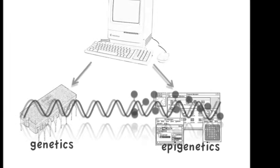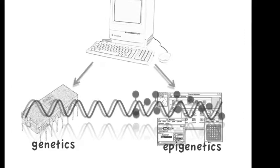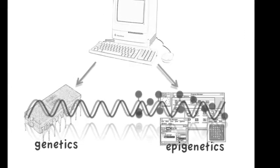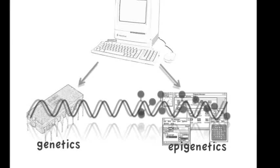ACTH triggers glucocorticoid release from the adrenal cortex as a key mediator of the hypothalamic pituitary adrenal neuroendocrine response to stress.